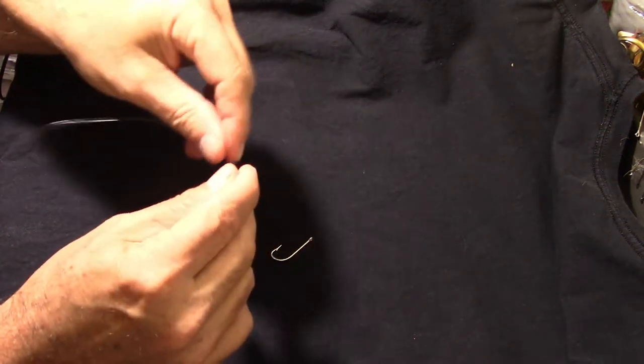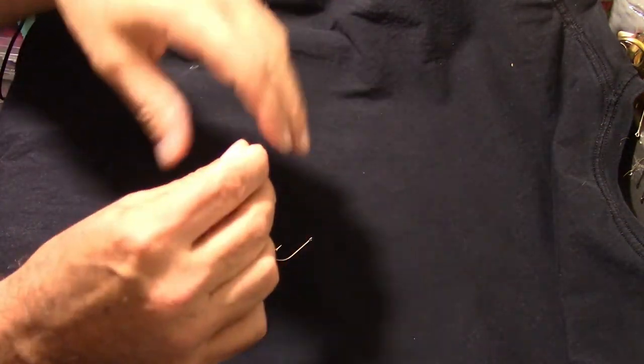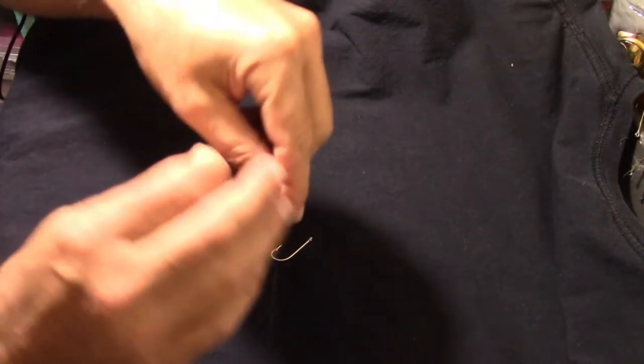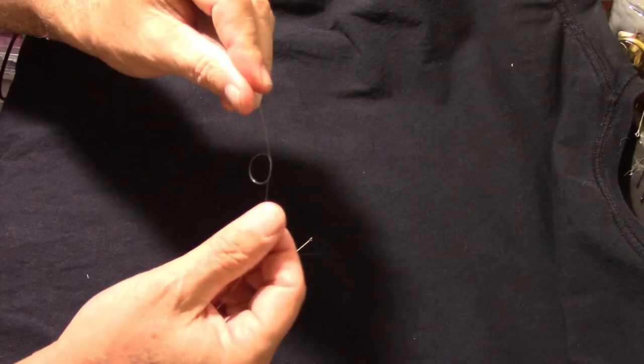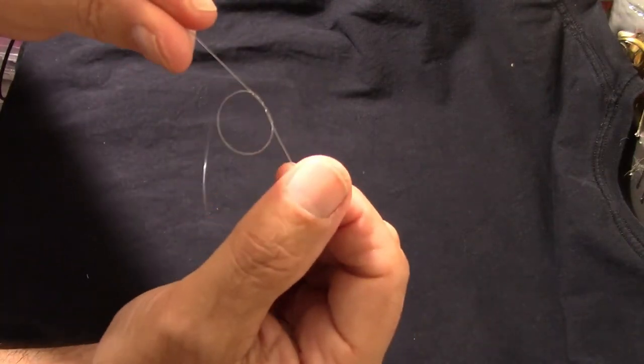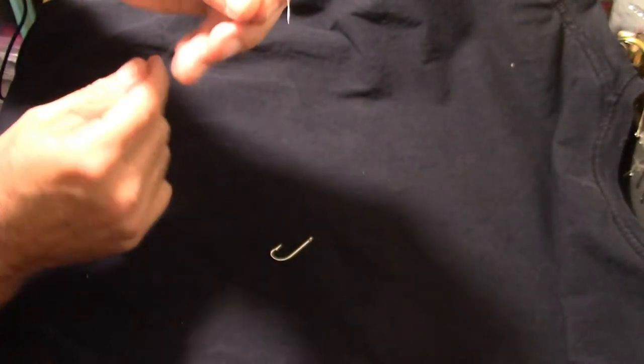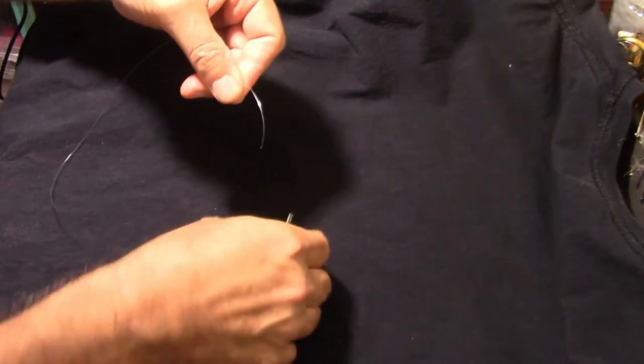Okay, so this knot is the non-slip mono loop and I'm using 25 pound mono. Basically what you do is you tie an overhand knot like that, and then take the tag end and put it through.